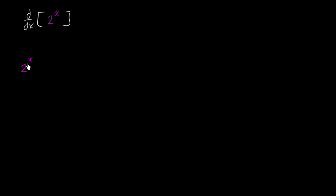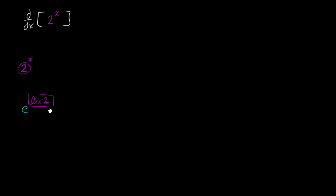How can we rewrite 2 so it is e to some power? Well, let's think about what e to the natural log of 2 power is. The natural log of 2 is the power that I would have to raise e to in order to get 2. So if we actually raise e to that power, we are going to get 2.